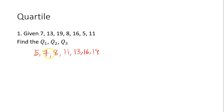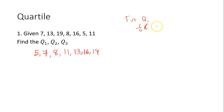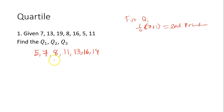There are seven values. To find Q1, we calculate 1/4 × (n+1) = 1/4 × (7+1) = 1/4 × 8 = 2, so it's the second position. Counting through the arranged data set: one, two — the second position value is 7. Hence the first quartile Q1 = 7.